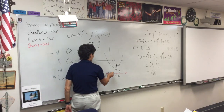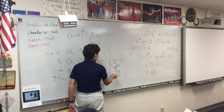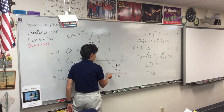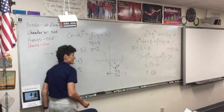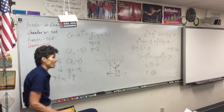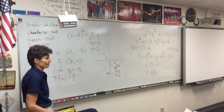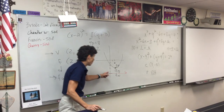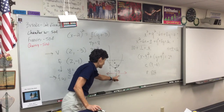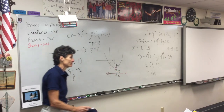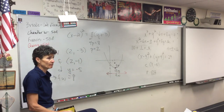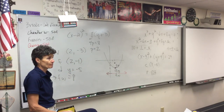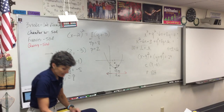Remember, whatever axis it crosses is the letter that you use. It crosses the y-axis at −5, so y = −5.